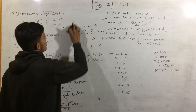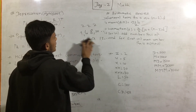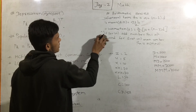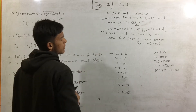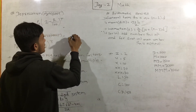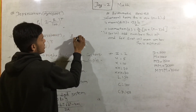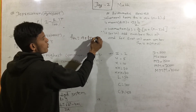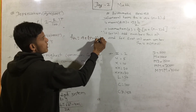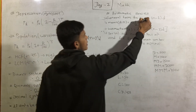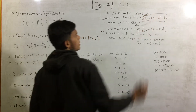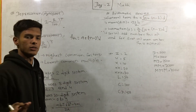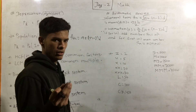General term. The general term Tₙ equals a plus (n minus 1) into d — this is the general term formula.